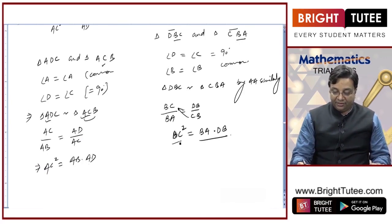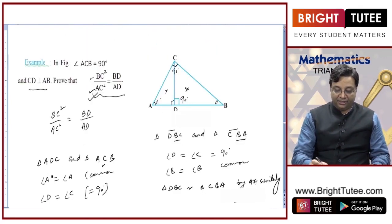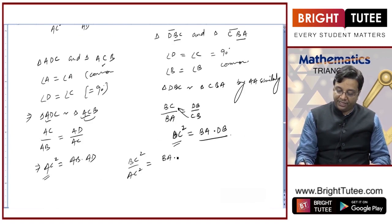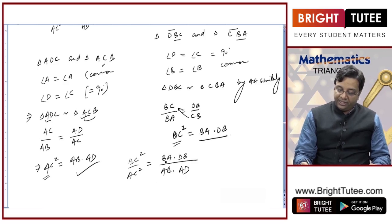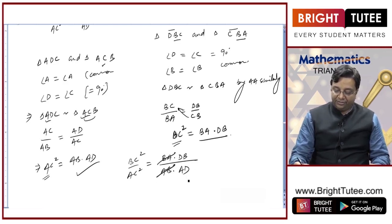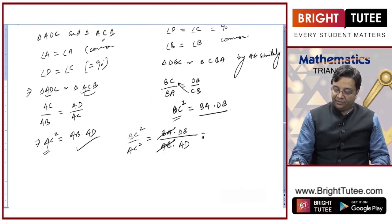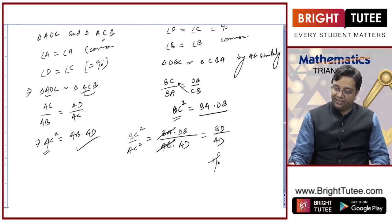Now I just require the ratio BC²/AC². This equals (BA · DB) / (AB · AD). Since BA and AB are the same, they cancel, leaving DB/AD, which is the same as BD/AD. Hence proved.